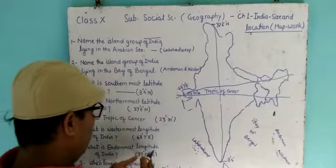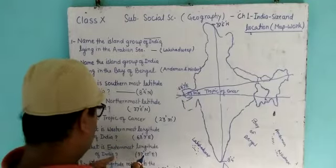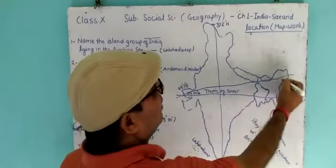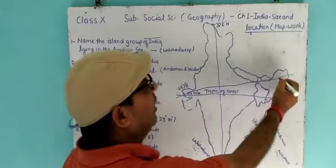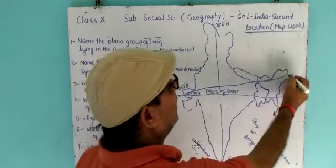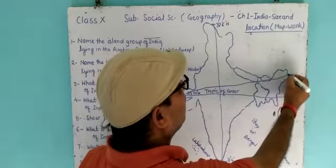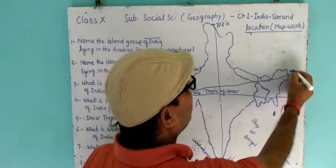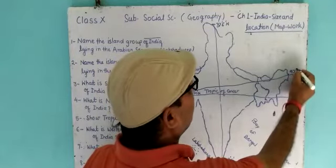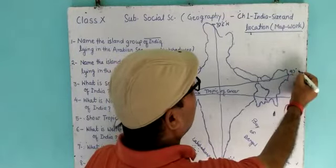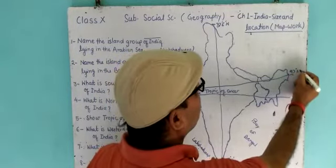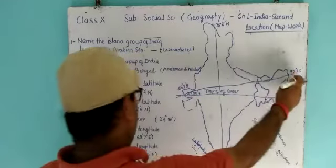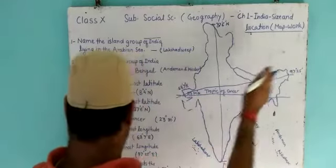What is the easternmost longitude of India? You know, Arunachal Pradesh is on the eastern side. So here it is 97 degrees 25 minutes East.